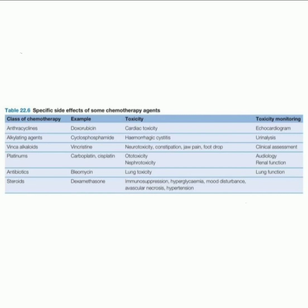Now repeating the important points likely to come on exams. Doxorubicin toxicity is cardiac toxicity, monitored by echocardiogram. Cyclophosphamide toxicity is hemorrhagic cystitis, monitored by urinalysis.